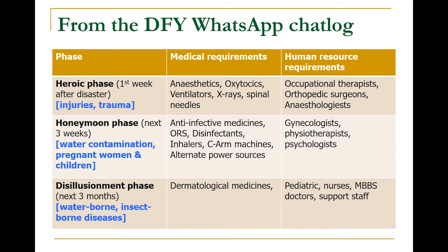The first week is to treat people with injuries and trauma. But the next few weeks it's mainly about water contamination, pregnant women, and children. Then come insect-borne diseases, because people are out in the open with homes collapsed, so water contamination and insect-borne diseases become the main issues. As you see, the medical requirements and human resource requirements change with time.